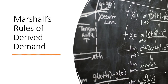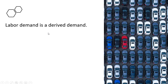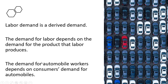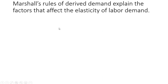Let's discuss Marshall's Rules of Derived Demand. Labor demand is an example of a derived demand. The demand for labor depends on the demand for the product that labor produces. The demand for automobile workers, for example, depends on the consumer's demand for automobiles. Marshall's Rules of Derived Demand explain the factors that affect the elasticity of labor demand.